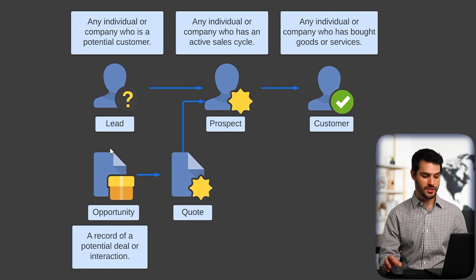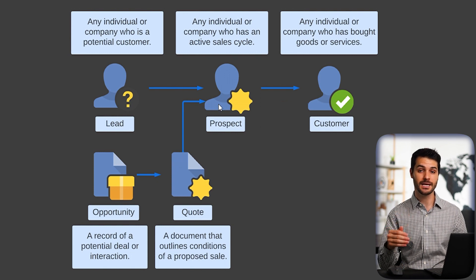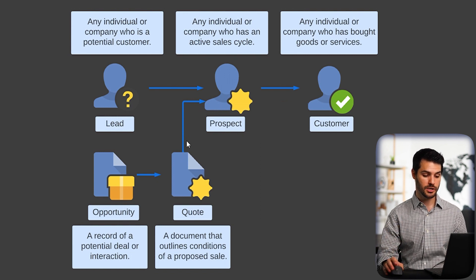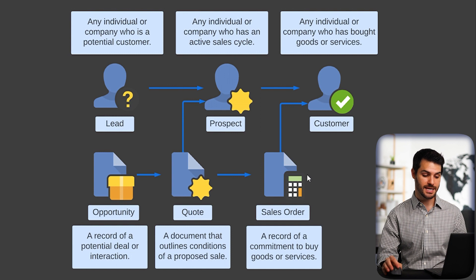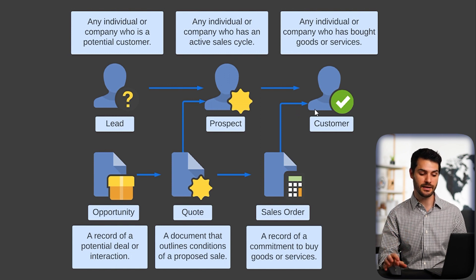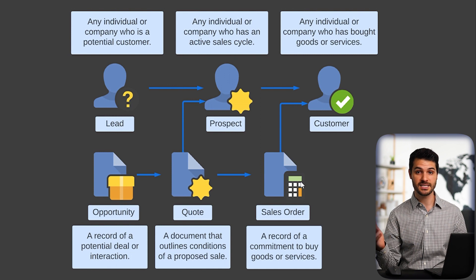Then you send the person a quote, which is a document that outlines the conditions of a proposed sale. The point at which you send them the quote, that person converts from being a lead to becoming a prospect — it immediately converts that record. From there, the quote progresses to a sales order, which is a record of a commitment to buy goods or services. Once a sales order is made, it automatically converts a prospect to a customer. So the quote forces a prospect, and the sales order forces a customer. Just as a customer is the beginning of the order-to-cash cycle, the sales order is also the beginning of that cycle.